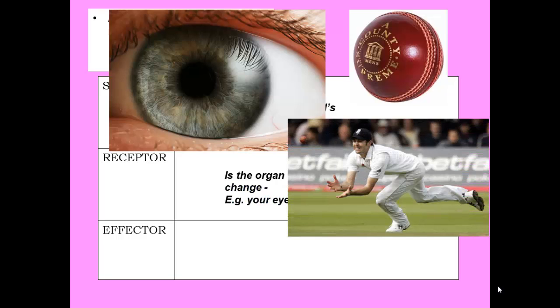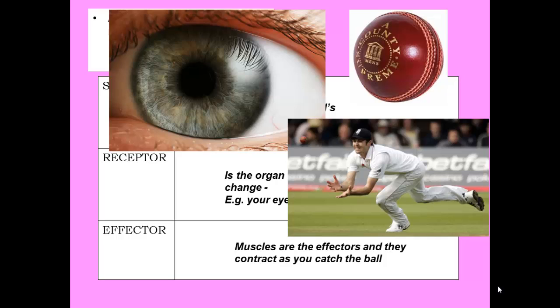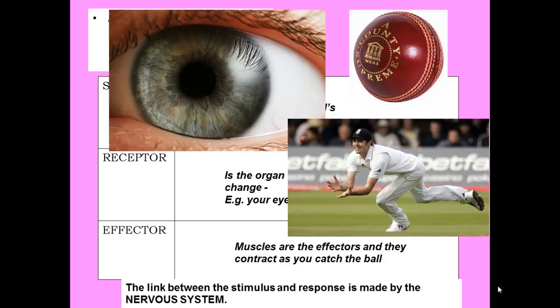And the effectors — here's Jimmy Anderson catching a cricket ball. Jimmy's brain has got to tell his muscles what to do, and those are his effectors. Muscles contract to catch the ball. Muscles can only really do one thing: contract — or not contract when they are relaxing — and so they never push, they only pull. The link between the stimulus, the ball, and the response, the muscles contracting, is made by our nervous system.